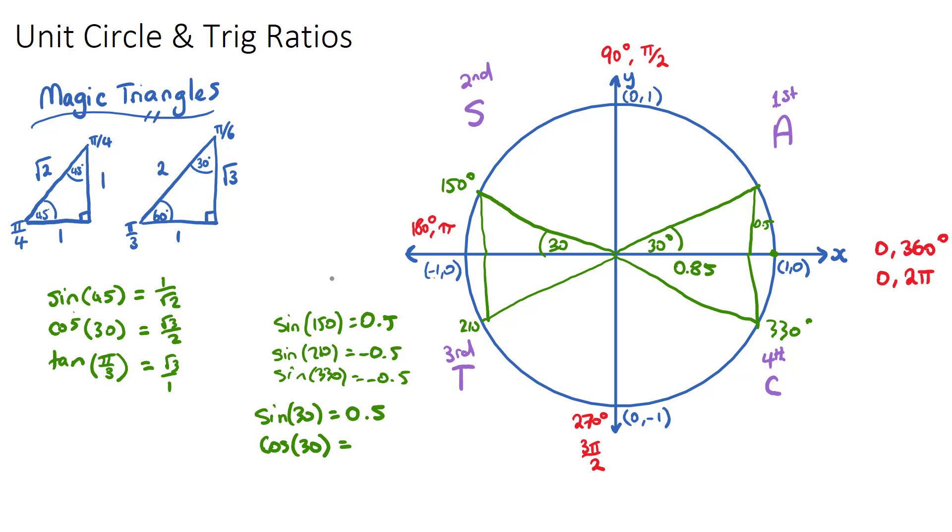And what we can actually do is a bit of a shortcut. You may have seen these letters before. A in the first quadrant, S in the second quadrant, T in the third quadrant, and C in the fourth quadrant. These stand for all. A stands for all. And that means if you take sine, cos, and tan of any angle in this first quadrant, it will be positive, because the height will be positive, the width will be positive, and tan is actually the opposite over the adjacent. It's the y over the x. So, they will all be positive.